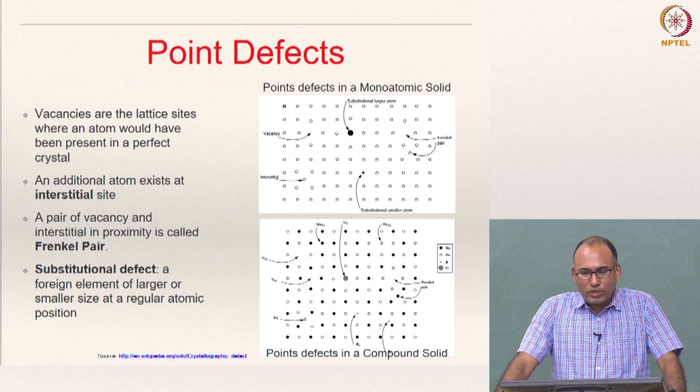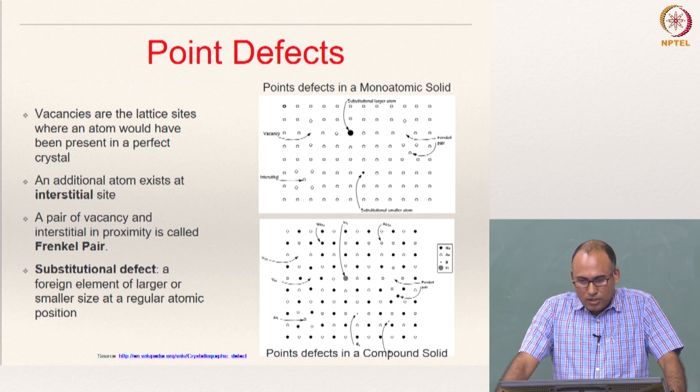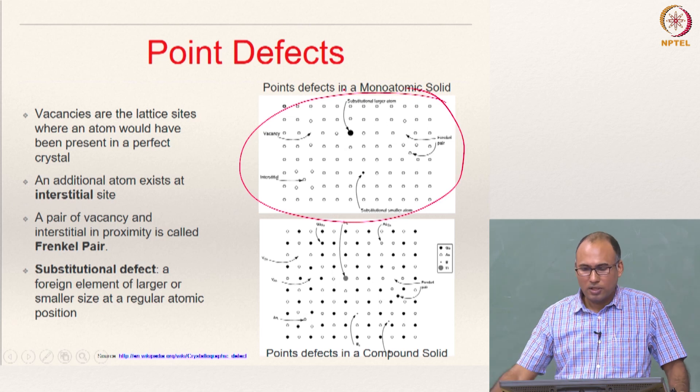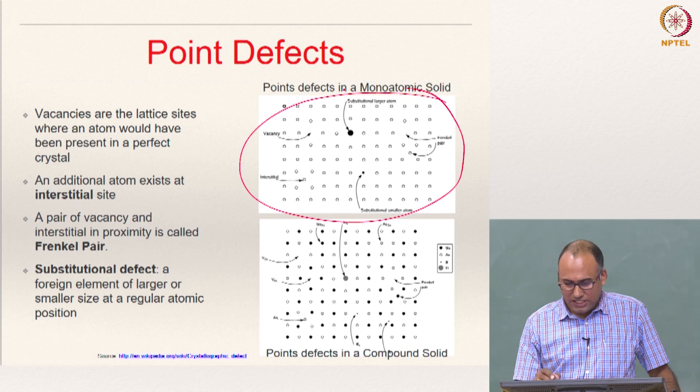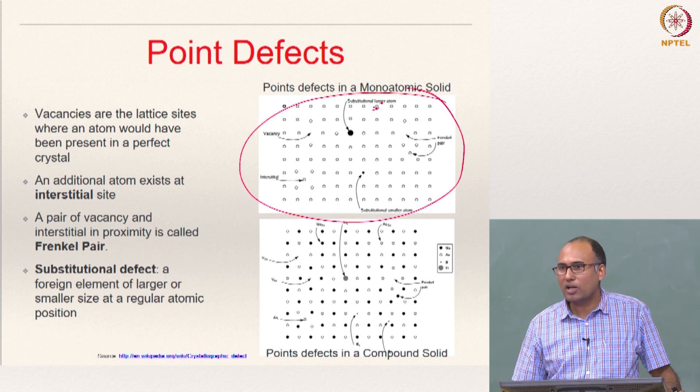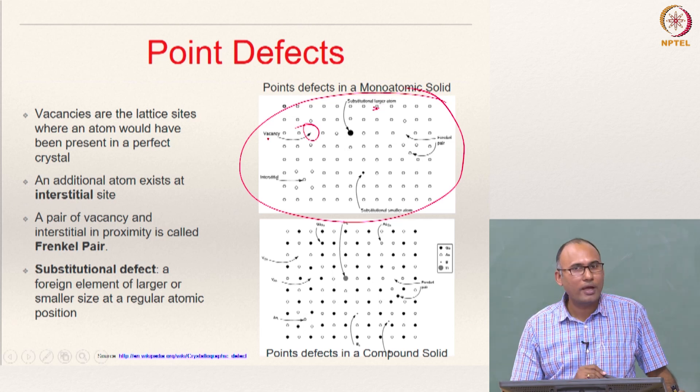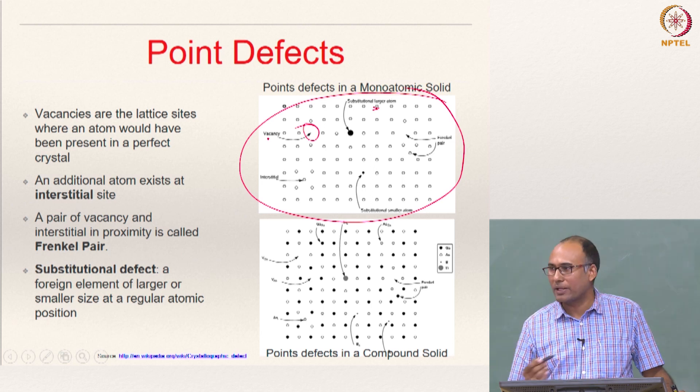Alright, so now let us look at point defects. If you see this crystal lattice, these are the atoms or lattice sites where there are atoms, and you see that in this position there is no atom where it should have been.